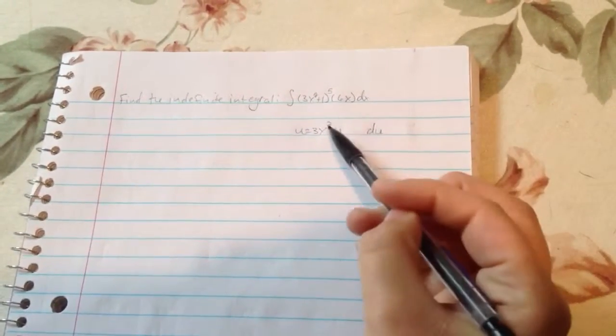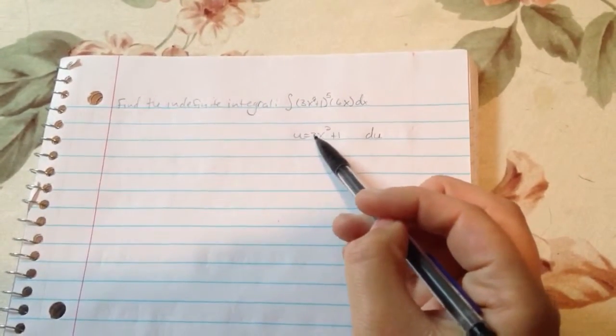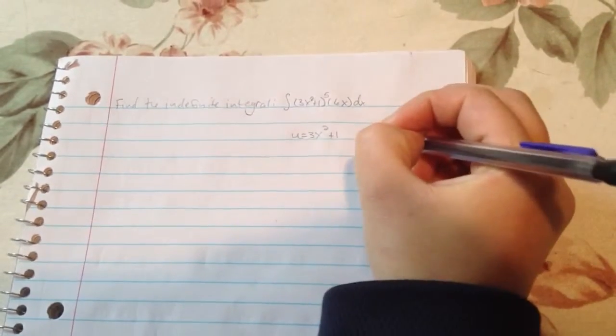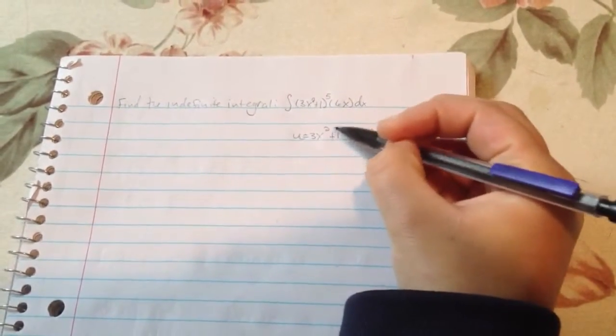So when you use basic rules of differentiation, power rule, this 2 comes down times 3. So this is equal to 6x. 1 goes away.